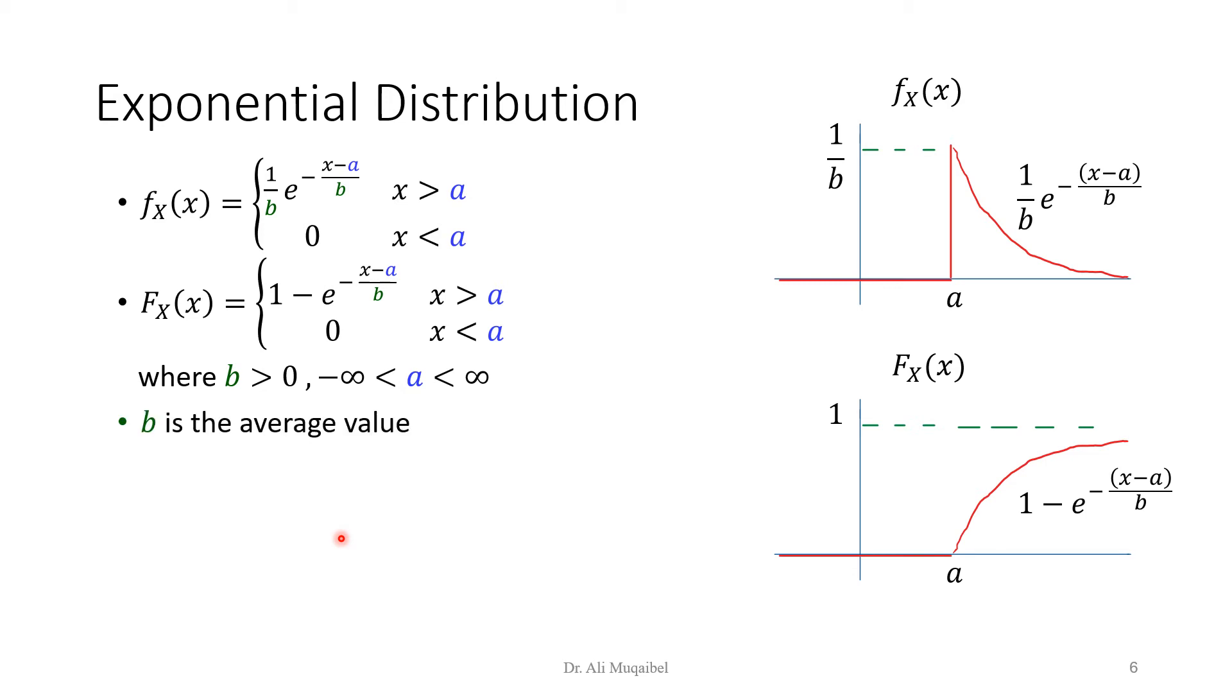We'll also later on see that B is equal to the average value of the distribution. One example here is used in radar applications, where it represents the raindrop size. It can be modeled as exponential. In many applications and networking, we also use the exponential distribution.